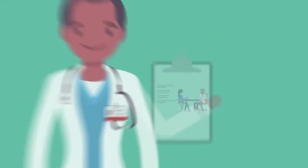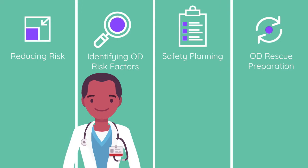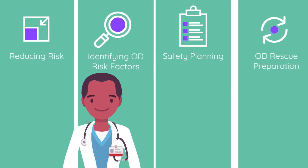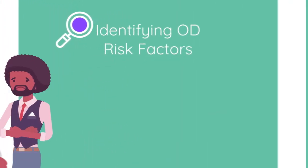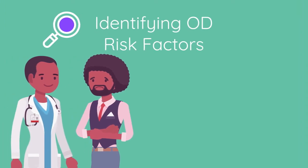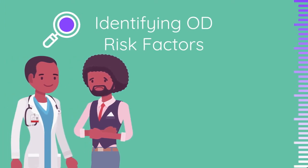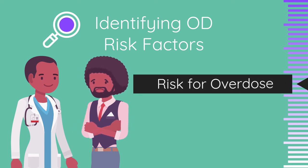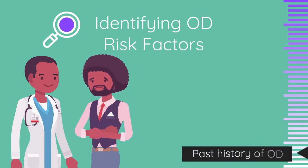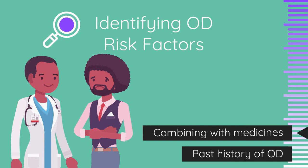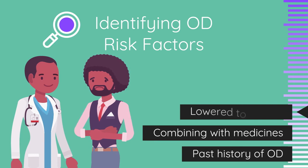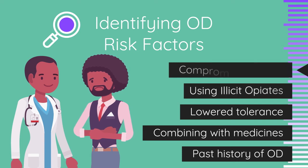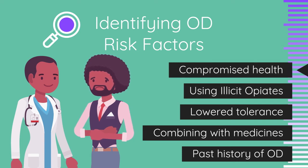The second key strategy is the identification of patient-specific overdose risk factors, bearing in mind universal precautions and pain management for all patients being treated with opioids for pain. Patients who are prescribed opioids for pain may not understand their risk for overdose, such as a history of overdose, the use of prescribed medications with other opioids or sedatives such as benzodiazepines and alcohol, lowered tolerance after a period of abstinence from opioids, the use of opioids contaminated with fentanyl, and the effects of compromised respiratory, renal, and hepatic function.